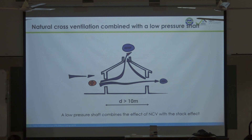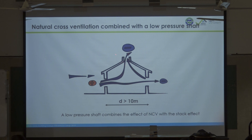If the thickness of the building exceeds 10 meters, natural cross ventilation is not enough because of air friction. An interesting solution is what I call a low pressure shaft: you create an opening at the top of the roof that generates a Venturi effect — the wind is captured and accelerated by these shafts, creating a low pressure at the top of the roof.